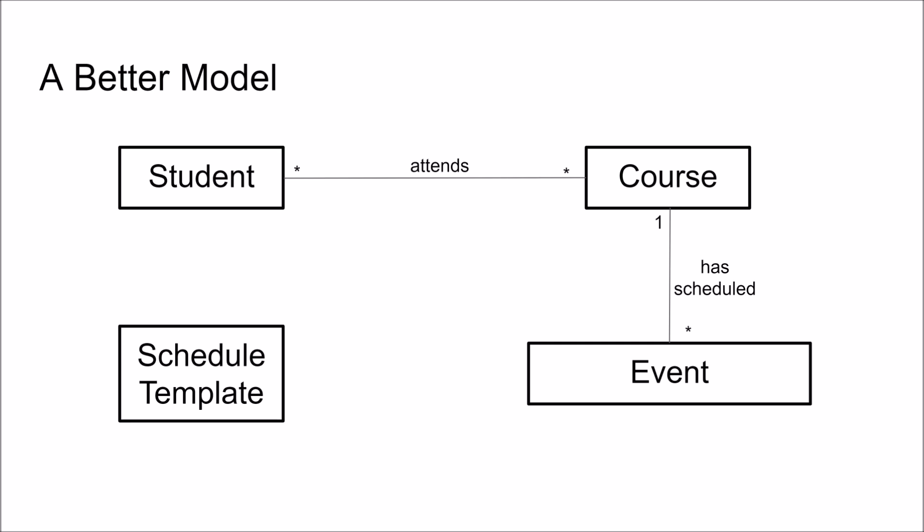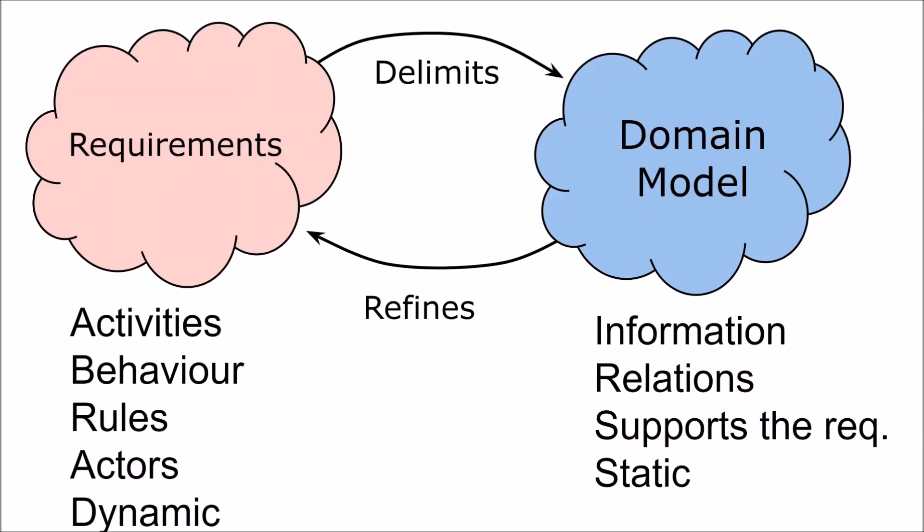Remember: the domain model should support the requirements. It should provide information needed so that the requirements can be executed. With the multiplicities of the associations we may also constrain the requirements — for example, we cannot have free-floating events, just as in the previous example we could not have free-floating orders. Orders are always connected to a customer, and in this case an event is always connected to a course. To conclude: the requirements delimit the domain model — they set the limit for what to model. The domain model refines the requirements. If you are asking questions about the requirements when doing domain modeling, you are probably on the right track.